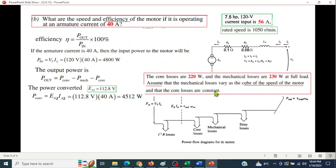Another condition is given: assume that the mechanical losses vary as the cube of the speed of the motor and that the core losses are constant. So core loss is constant, but the mechanical loss is varying as the cube of the speed. Let's see how to calculate mechanical loss. P_mechanical is the ratio of the speeds cubed times the original mechanical loss, which is 230 watts. So from here, plugging in these values, the new mechanical loss will be 339 watts.